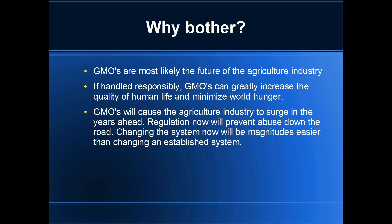So why should we bother? GMOs are most likely where we're heading in the future, and if we handle it responsibly, genetically modified organisms can greatly increase the quality of human life and minimize world hunger. Based on the growth in the agriculture industry we've seen to date, further research will cause a great surge in the industry in the years ahead. If we regulate now, it will prevent abuse down the road and make it easier to create a system that we as citizens and consumers want. If the agriculture industry gets even bigger and is allowed to maintain this loose regulatory system, it's going to be very hard to change once they have that much more income and sway.